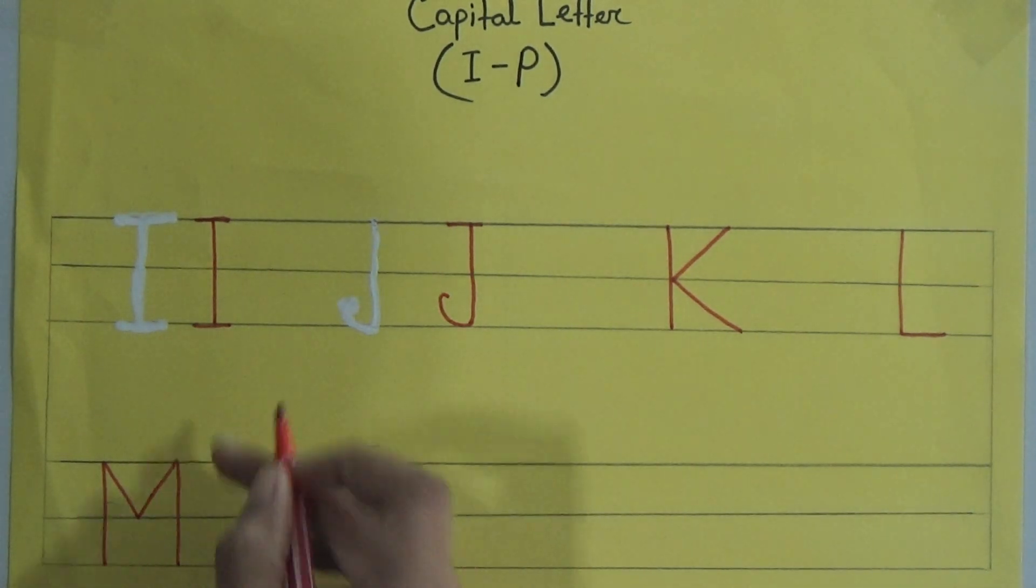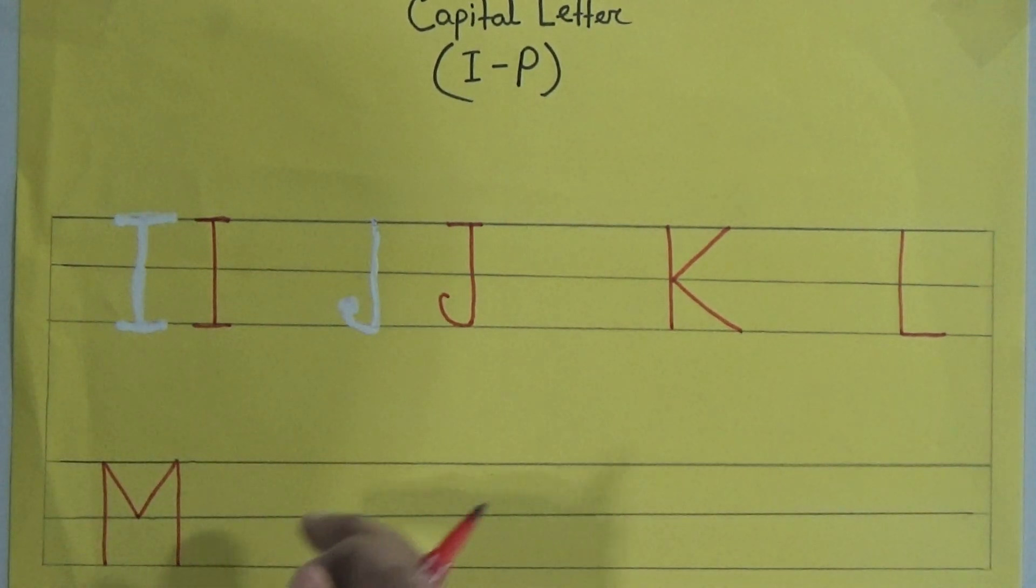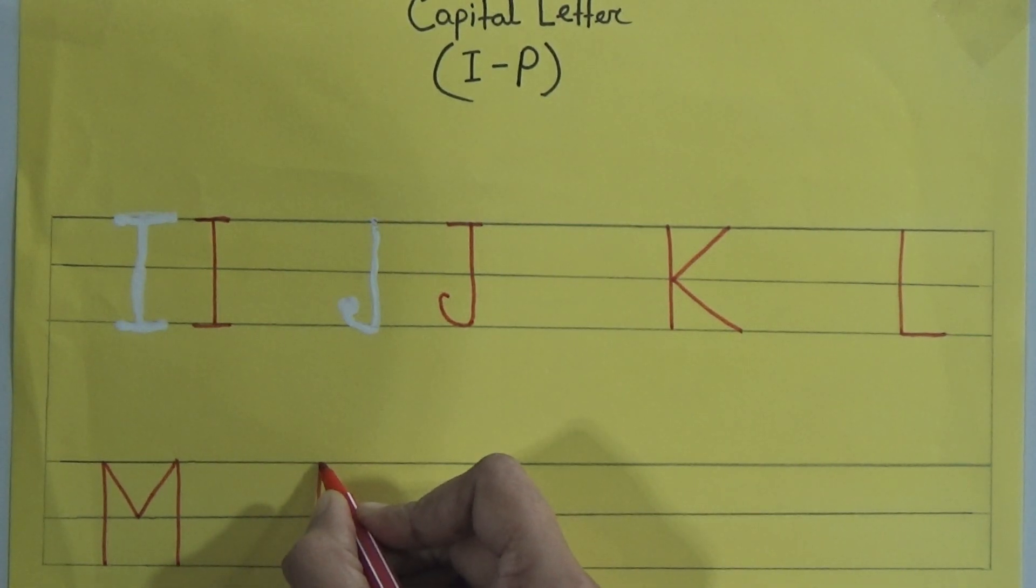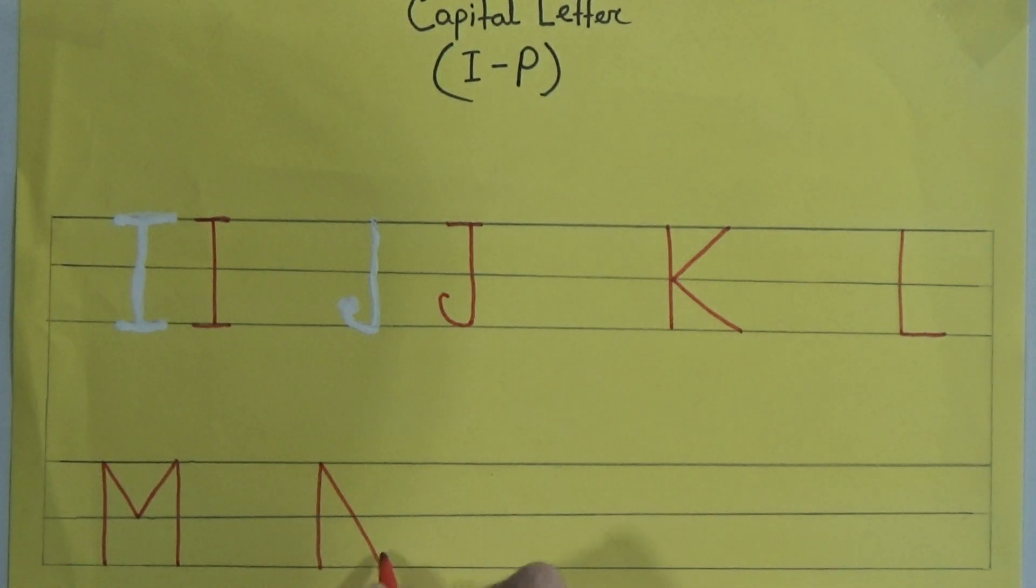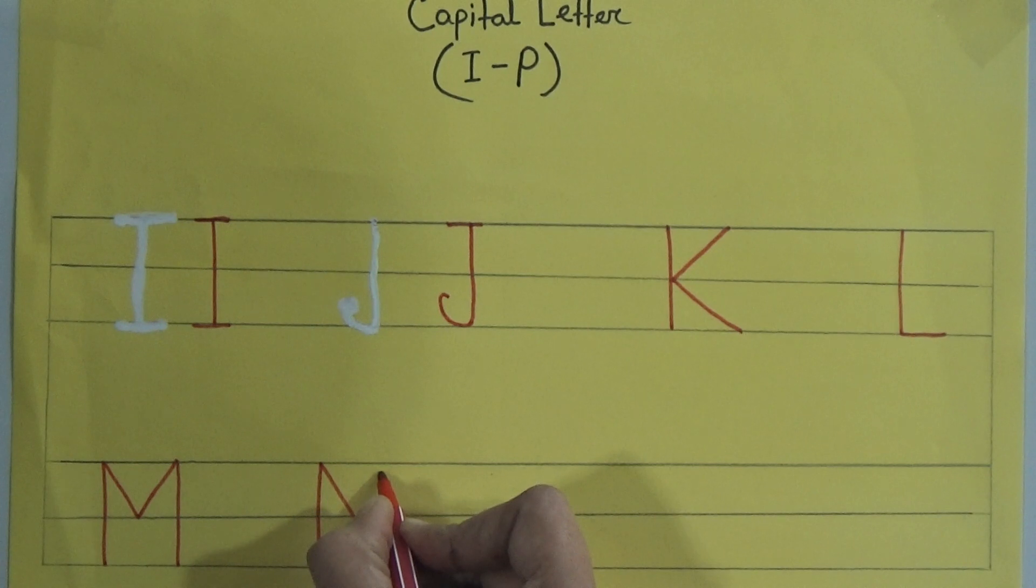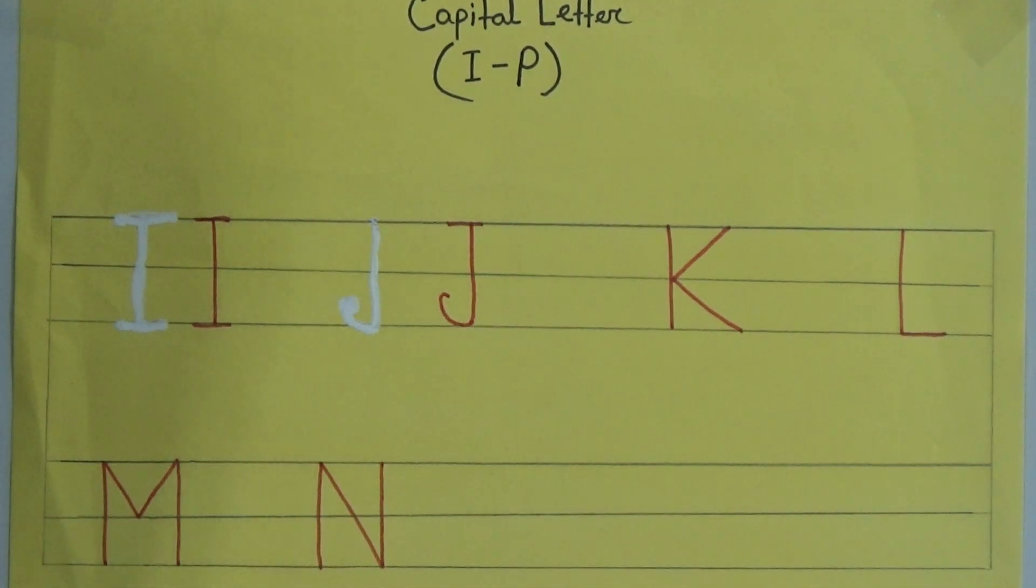And now I, J, K, L, M, N. Another one is N. One standing line, then another slanted line to the right, then one standing line up to the top. That makes N.